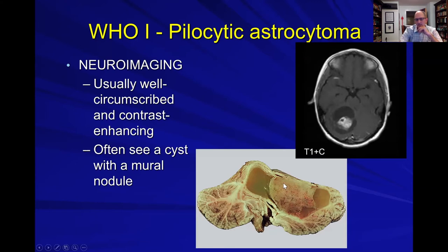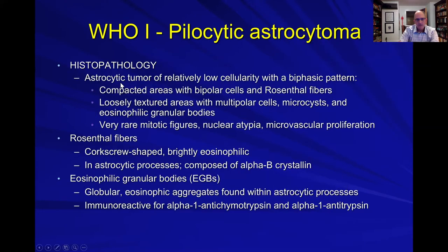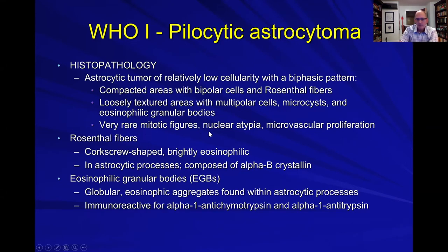This specimen is a great example of how it's a very well circumscribed, well-defined nodule with that cyst. Histopathologically, this astrocytic tumor is relatively low cellularity. It has a unique biphasic pattern: a compacted area of bipolar cells and Rosenthal fibers, and then loosely textured areas with multipolar cells, cysts, and eosinophilic granular bodies. It is very rare to see mitoses, atypia, or microvascular proliferation.